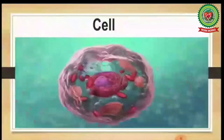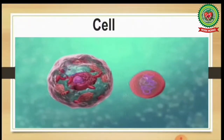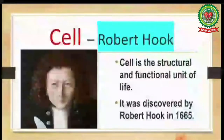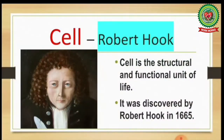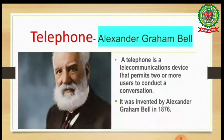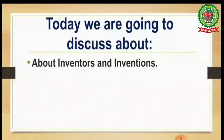For example, the cell is a structural and functional unit of life. It was discovered by Robert Hooke in 1665. It is a discovery because the cell was already existing before 1665. But the telephone is an invention because it was not existing before 1876. It was invented by Alexander Graham Bell in 1876.